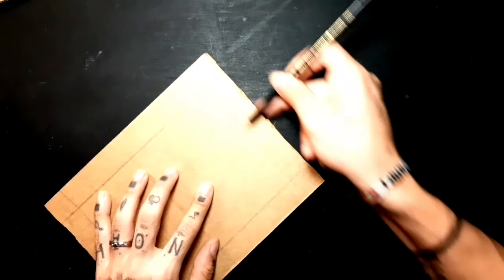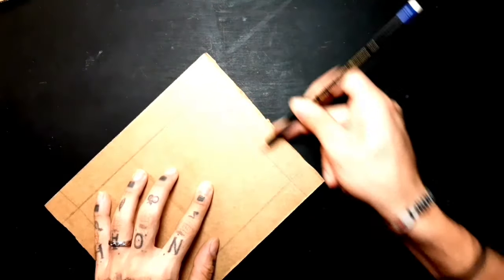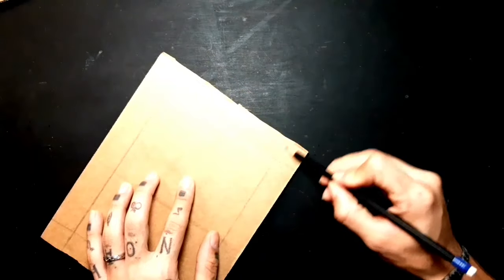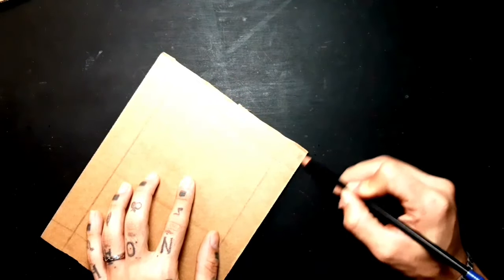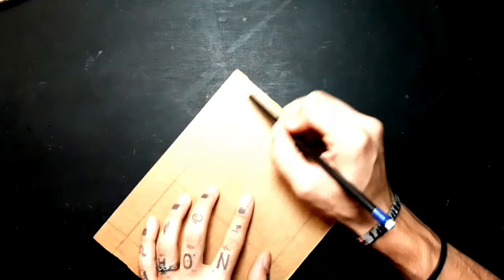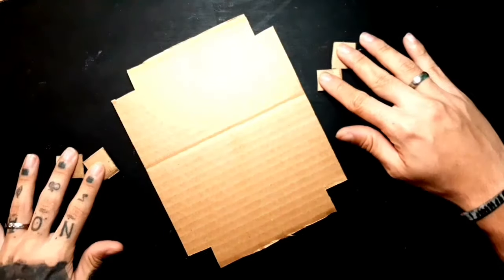Once we have our rectangle properly measured, we start with the details, which we'll mark as you can see in the video. Once we have our details properly identified on the mask, we'll cut the corners to give it that characteristic 8-bit style.